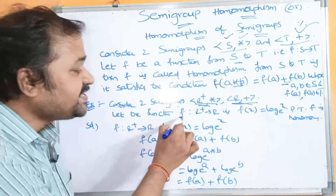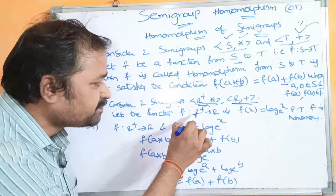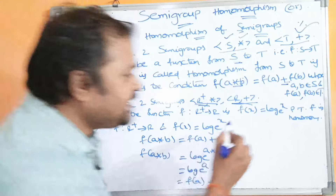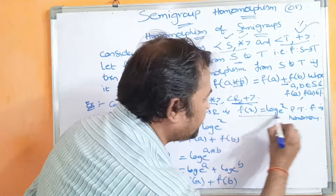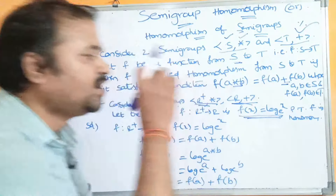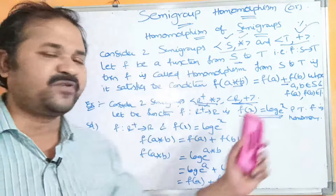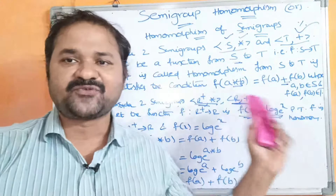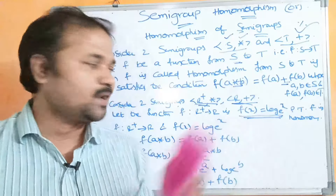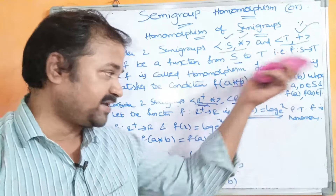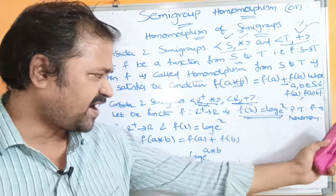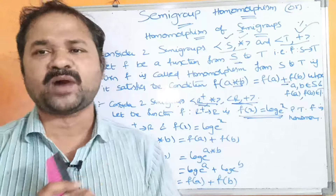Let the function F map from R⁺ to R. The function is defined as F(x) = log(eˣ). Prove that this function is a homomorphism.